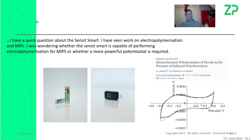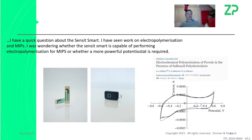I grabbed a paper from the literature to check what voltages they were using. I think the Sensit Smart could handle that working electrode voltage, but the user's concern is about compliance voltage. Honestly, we have not used the Sensit Smart to do electropolymerizations. I recognize the question — I think you stand a chance — but unless I've done it, I can't absolutely say yes. I feel the Sensit Smart is really an analytical tool, and what you probably need for synthesis is a more powerful potentiostat, so you can do both synthesis and analysis.